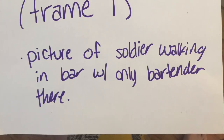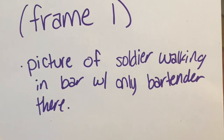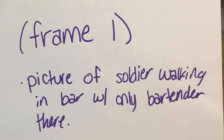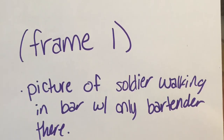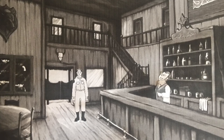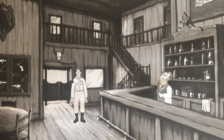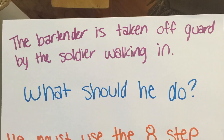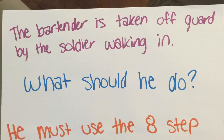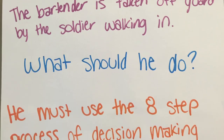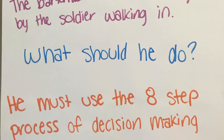Frame 1 should be a picture of the soldier walking into the bar with only the bartender there. The bartender is taken off guard by the soldier walking in. What should he do?